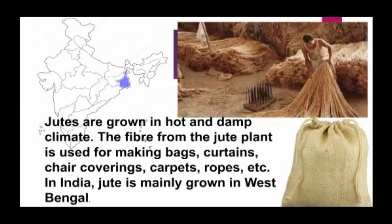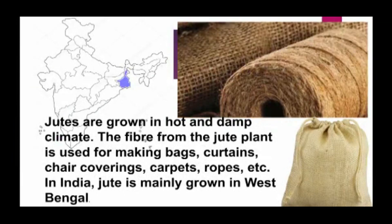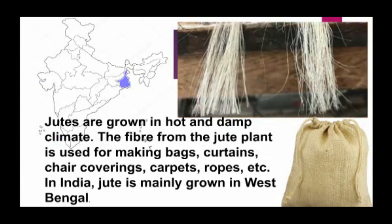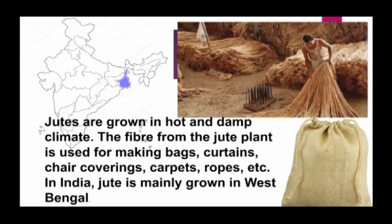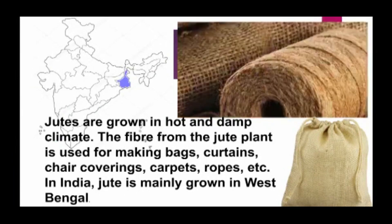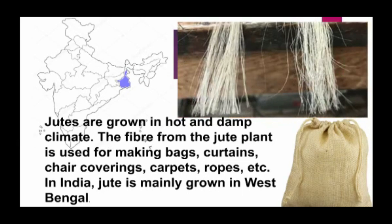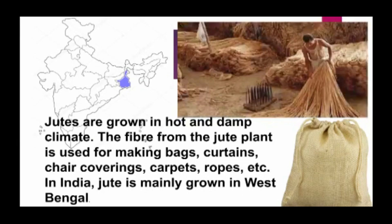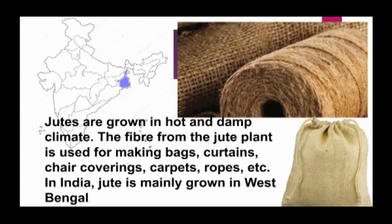Jute is grown in a hot and damp climate. The fiber from the jute plant is used for making bags, curtains, chair coverings, carpets, ropes, etc. In India, jute is mainly grown in West Bengal.